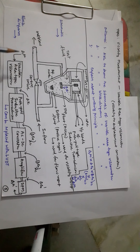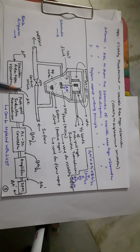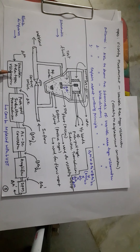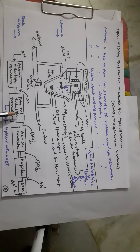The block diagram shows the variable area type viscometer converting viscosity energy to displacement energy. This displacement is measured by a position-measuring transducer — either a push-pull inductive transducer or an LVDT (Linear Variable Differential Transducer). The variable area type is the primary transducer, and the push-pull inductive transducer or LVDT serves as the secondary transducer. Both give an AC output voltage.